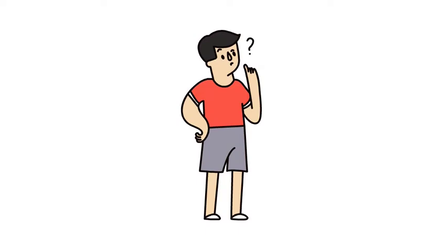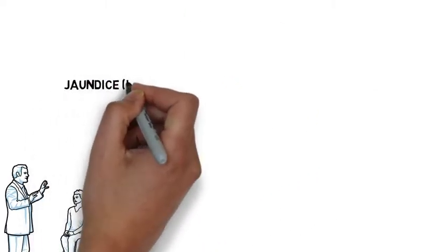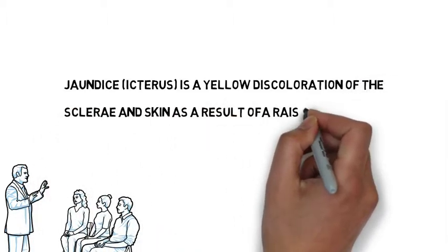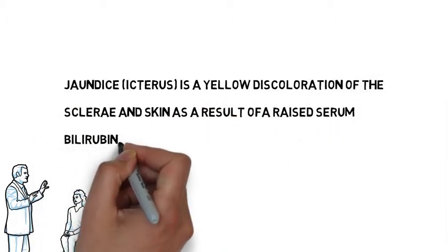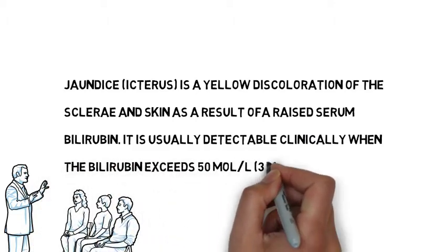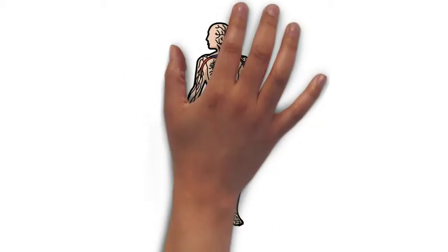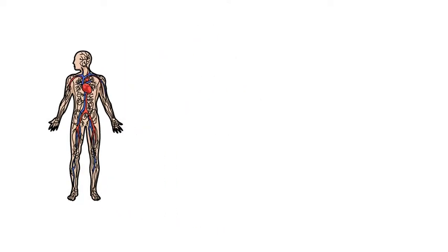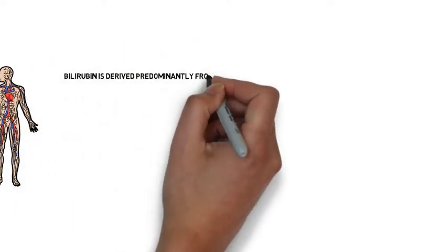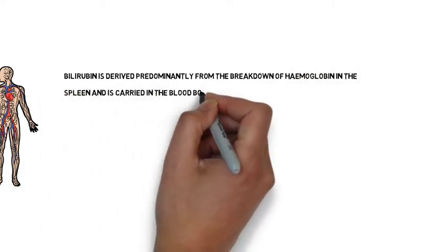So what is jaundice? Jaundice is a yellow discoloration of the sclera and skin as a result of a raised serum bilirubin. It is usually detectable clinically when the bilirubin exceeds 51 micromoles per liter. Bilirubin is derived predominantly from the breakdown of hemoglobin in the spleen and is carried in the blood bound to albumin.